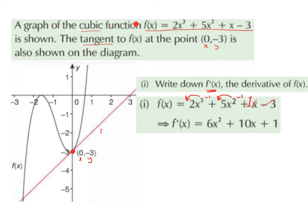A graph of the cubic function f(x) = 2x³ + 5x² + x - 3 is shown. Here is the function. The tangent to f(x) at the point (0, -3) is also shown on the diagram. Here is the tangent, and this is the point (0, -3) where the tangent touches the curve.